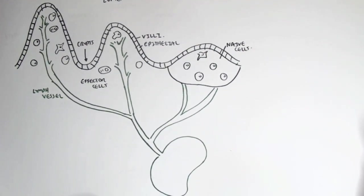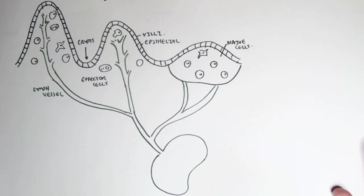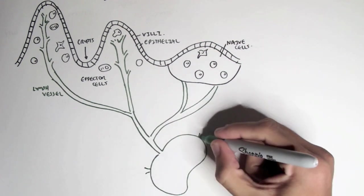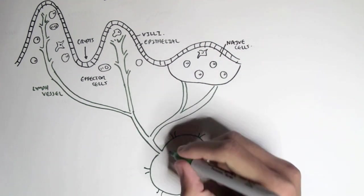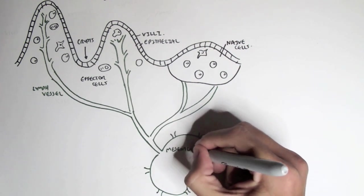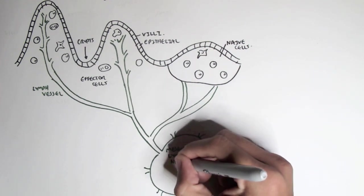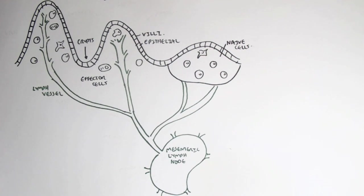The inductive sites are also connected via lymph vessel to the mesenteric lymph nodes. Within the mesenteric lymph nodes, we also have the naive lymphocytes, where if the dendritic cell captures an antigen, it can go into the mesenteric lymph nodes and activate the naive lymphocytes as well.